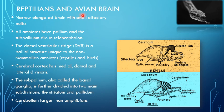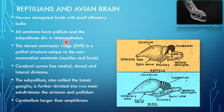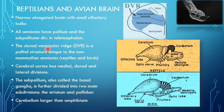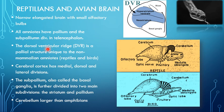In the reptilian and avian brain, they have a narrow elongated brain structure, as you can see here, with small olfactory lobes. All amniotes have pallium — meaning mantle or cover — and sub-pallium divisions in the telencephalon, which is the part of the forebrain. The dorsal ventricular ridge is a structure in the pallium uniquely found in non-mammalian amniotes, that is, present only in reptiles and birds.